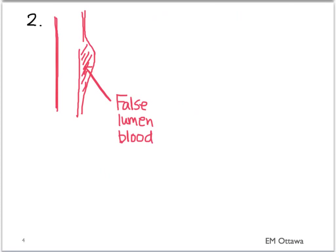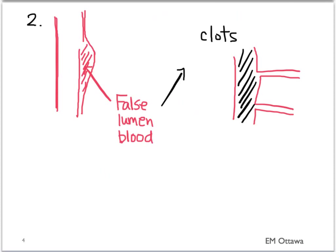Number two, let's look at the blood in the false lumen. Often, the blood in the false lumen clots. When the major arteries come off the aorta, those coming off the section with the dissected flap will be full of clotted blood, and therefore leading to ischemia to wherever these major arteries are leading to.